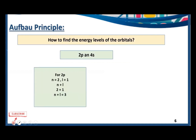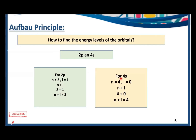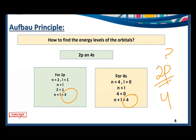Another example: for 2p, n=2 and l=1, so n plus l = 3. For 4s, n=4 and l=0, so n plus l = 4. Since 2p has the lower n plus l value, we fill 2p first and then 4s. Energy is directly proportional to n plus l, so a lower n plus l means lower energy and a higher n plus l means higher energy.